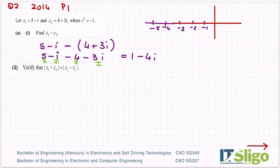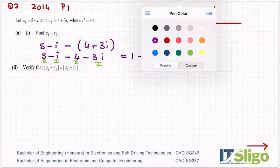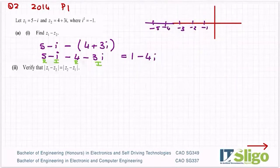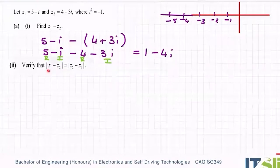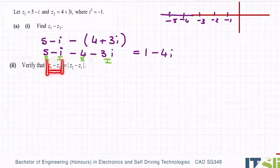Part 2: Verify that the modulus of Z1 minus Z2 is equal to the modulus of Z2 minus Z1. Let's give that one a go. So we have Z1 minus Z2. When you've got two terms inside the modulus brackets, you have to find an expression for that first and then get the modulus of it. So we know what Z1 minus Z2 is, we're just after finding it. Therefore, the modulus of Z1 minus Z2 is the modulus of 1 minus 4i.